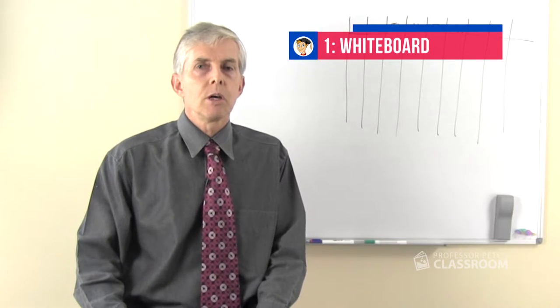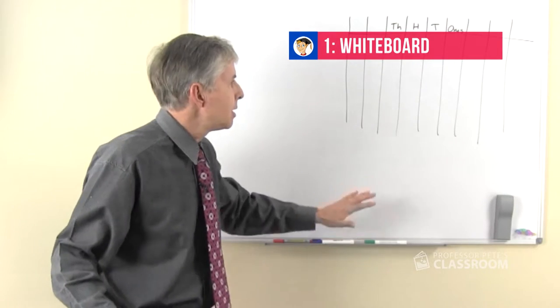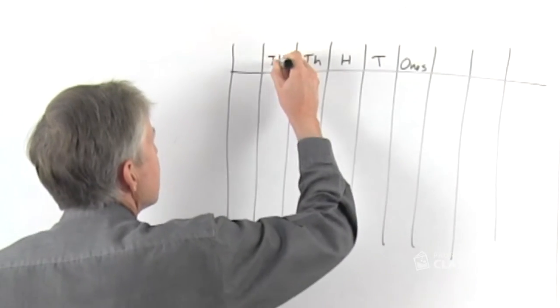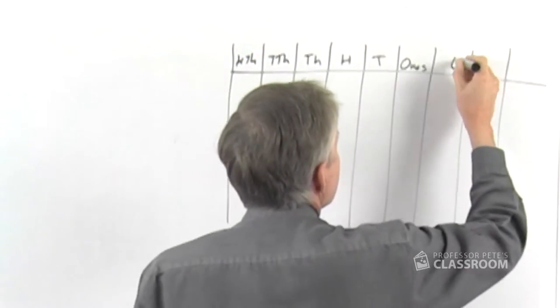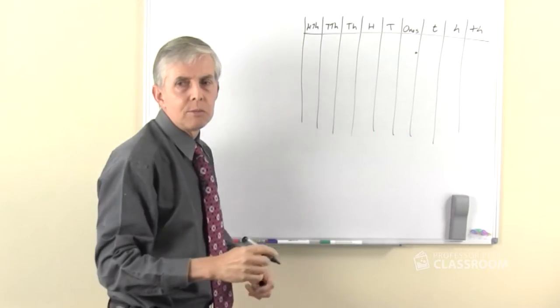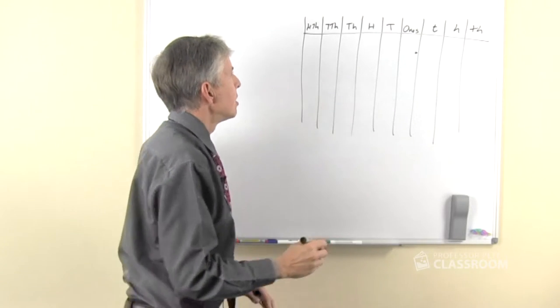So here's the first method, it requires no complicated materials, it's simply using the whiteboard. We're going to draw columns, we'll label the columns with the names of the places, we'll put a decimal point because we're going to need that when we use any number that has a decimal component to it.